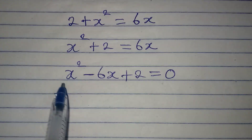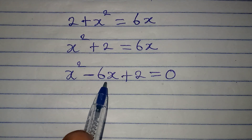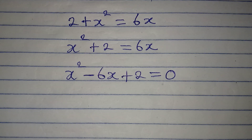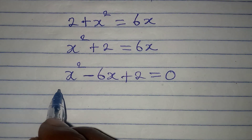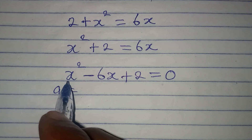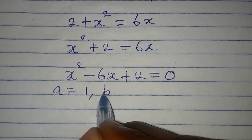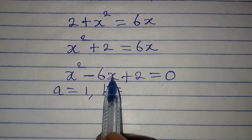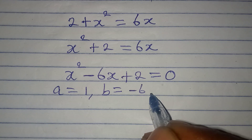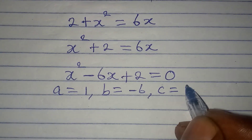The next step is to factorize or solve this quadratic equation. But can we factorize this? No. In that case we'll apply the formula method. Our a is the coefficient of x squared which is 1, our b is the coefficient of x which is minus 6, and our c is the constant which is 2.